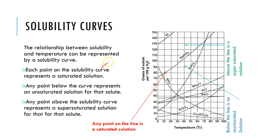Each point along the solubility curve — the line forming the graph — represents a saturated solution. For example, on the sodium nitrate curve at 40°C, if I draw across to the y-axis, that gives approximately 105 grams. So at 40°C, you can dissolve 105 grams of sodium nitrate per 100 grams of water, and this makes a saturated solution.